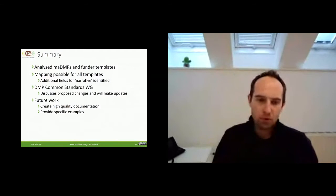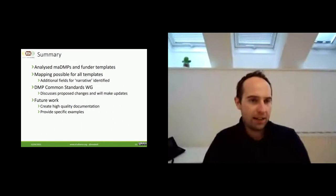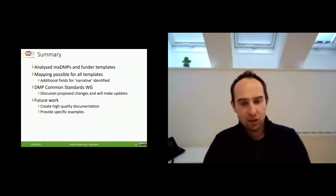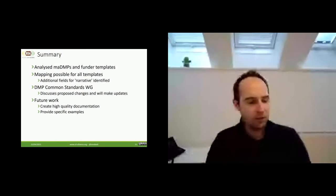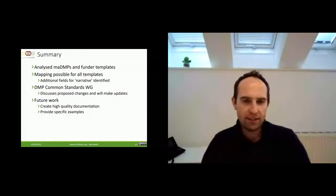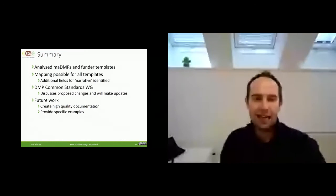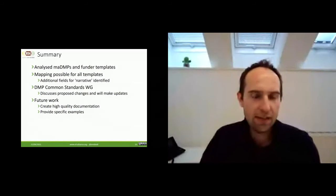In summary: the working group produced the recommendation and we're now helping with adoption. We analyzed MA-DMPs and funder templates to confirm that mapping is possible — we just need to add a few fields to support the human-readable narrative part of DMPs. The proposed changes — modifications to the recommendation documentation and the funder extension — are being discussed now in the DMP Common Standards working group. Next steps are to create high-quality documentation and provide specific examples. Please join our group, participate in recommendation adoption, and send questions to any of the working group chairs.